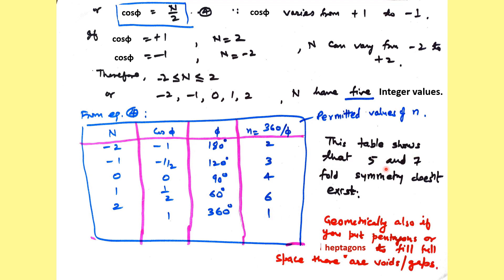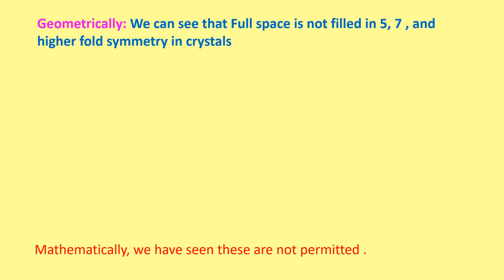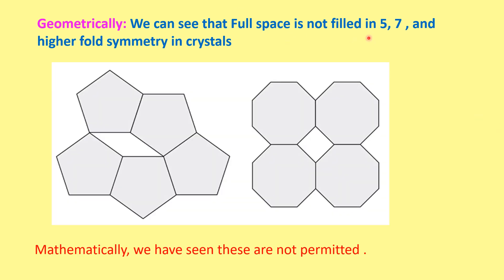From this table, only 1, 2, 3, 4, and 6-fold symmetries are possible, and that is why 5-fold and 7-fold symmetries do not exist. Geometrically, it is also not possible to fill the full space with 5-fold symmetry — using pentagons leaves voids — and similarly for 7-fold symmetry. Mathematically and geometrically, 5-fold, 7-fold, and higher symmetries are not permitted.